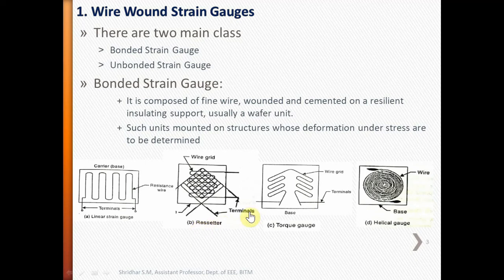Figure C shows a torque gauge where the wire is gridded in a specific form for measurement of torque. The helical gauge has wire circularly wound on a base. These commonly used forms of resistive wire strain gauges are meant for specific measurement of physical quantities.